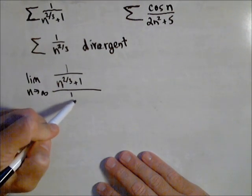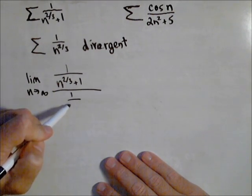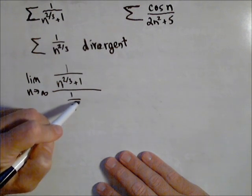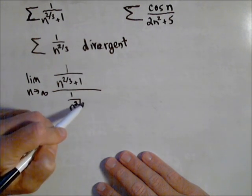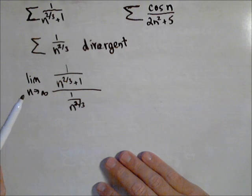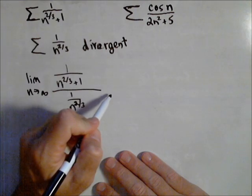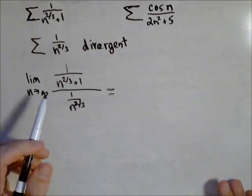On bottom here, I'm gonna put the one that I chose, the one that I knew was divergent. Calculate this limit. If it comes out to be a non-zero number, we're done. So let's see how this is gonna play out.